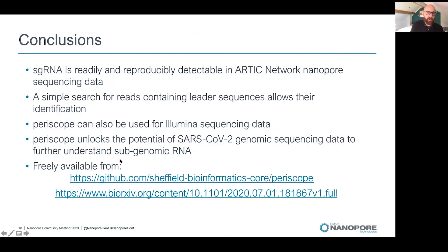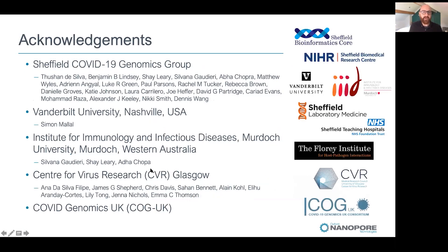In conclusion, subgenomic RNA is readily and reproducibly detected in ARCTIC Network nanopore sequencing data, and a simple search for reads containing leader sequence allows their identification. The approach also works for Illumina sequencing data, and we think it unlocks the potential of SARS-CoV-2 genomic sequencing to further understand subgenomic RNA. Periscope is available on GitHub, and a preprint of our findings is also available. We acknowledge everyone in the Sheffield COVID-19 genomics group, Simon Malal and Silvana at Vanderbilt, and the Centre for Virus Research in Glasgow for the Glasgow dataset.